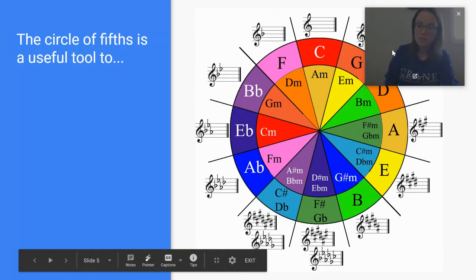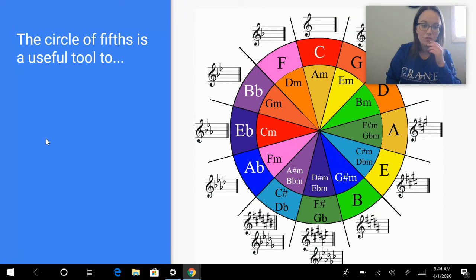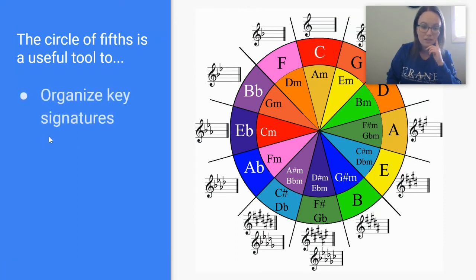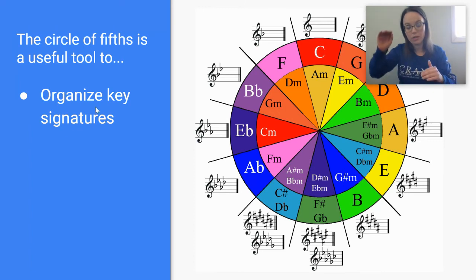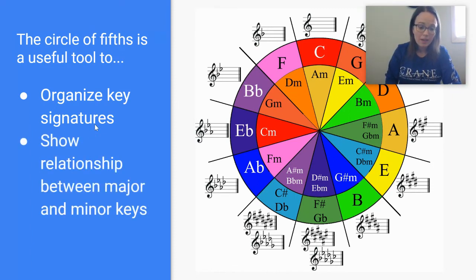So now let's take a look at what this can be useful for. There's a lot of good uses for the circle of fifths, and the first is to organize key signatures. It gives us a way of showing it incrementally, like I just went through on the last slide where you're adding sharps or adding flats.